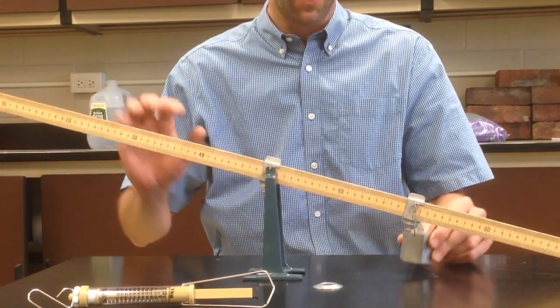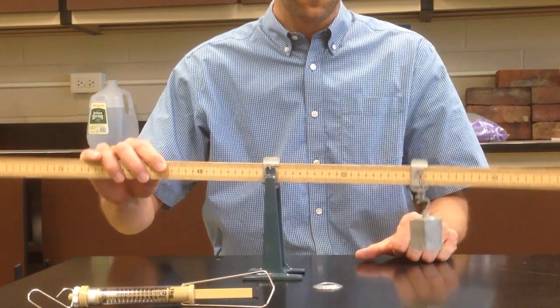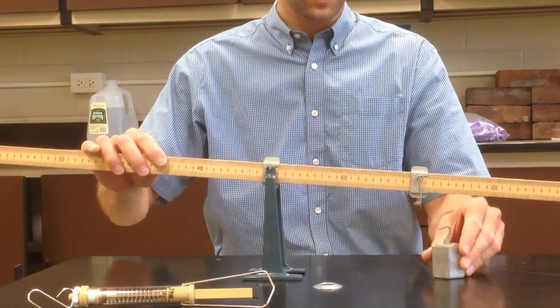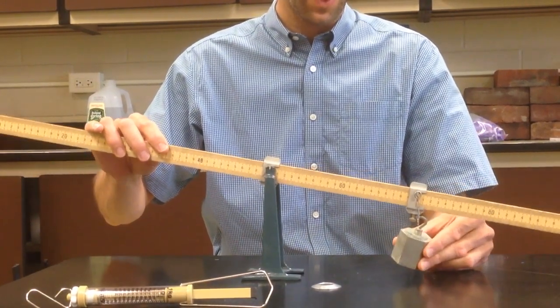There are different weights you may add. One is this style weight right here. If you use this style weight with a hook on top, you'll want to use one of these sliders to attach the weight to the ruler.